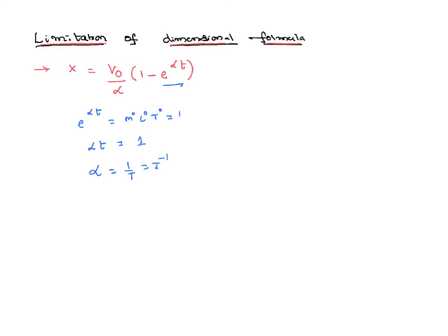Similarly, you can see very clearly it is given in this problem that x can also be expressed as v0 by alpha minus v0 by alpha e power alpha t. So displacement is expressed in two terms. As we said, as per the principle of homogeneity,